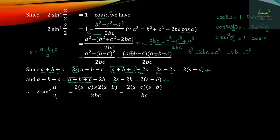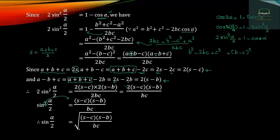sin(A/2) is equal to square root of (s minus c) into (s minus b) divided by bc. sin squared (A/2) equals (s minus c) into (s minus b) divided by bc. So sin(A/2) equals square root of (s minus c)(s minus b) over bc.